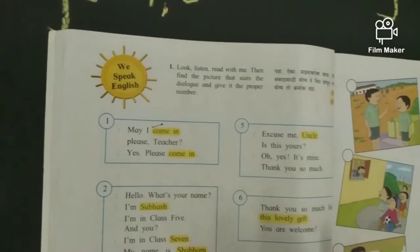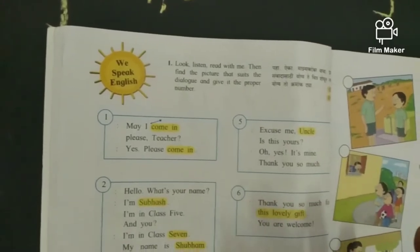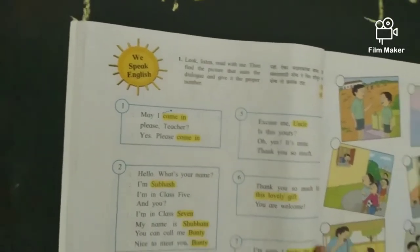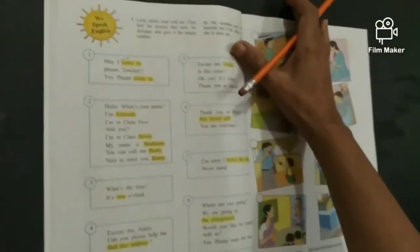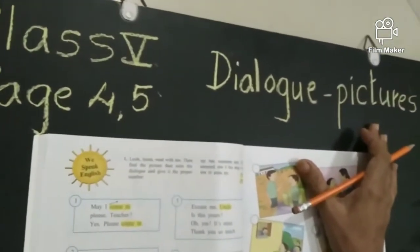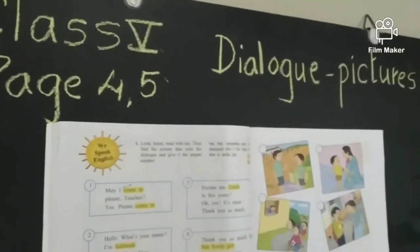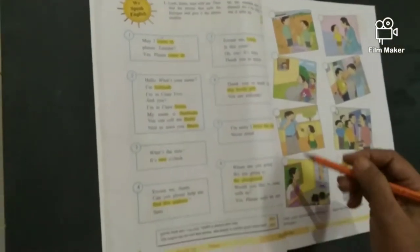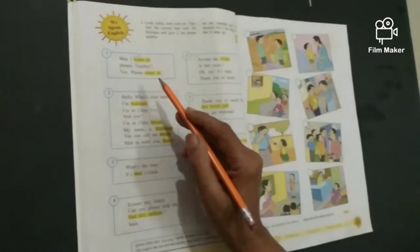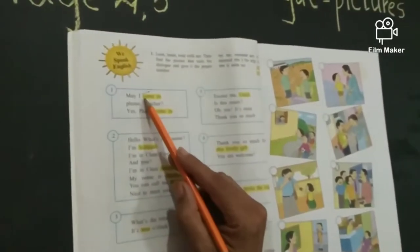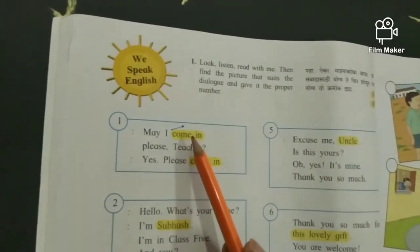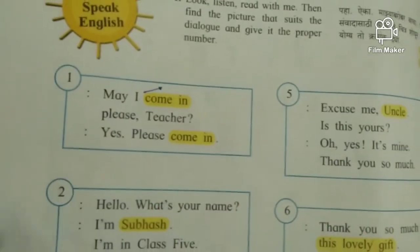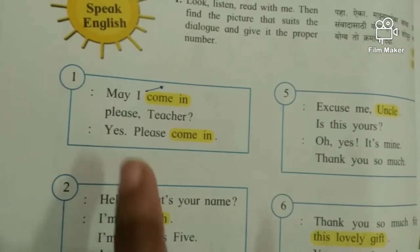Now, in this session, we shall do the dialogue and pictures. We shall do page number 4 and 5. Now, listen to the dialogues and at the same time, read the text.